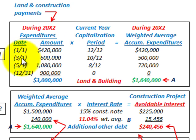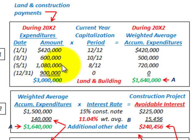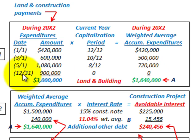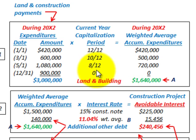For the March 1st payment, there are 10 months left in the year, so we use 10/12 times the payment amount. For the May 1st payment, 8 months remain, giving 8/12 times the expenditure amount — a weighted average of $720,000. The last payment made on 12-31 has a capitalization period of zero since it's made at year-end. Summing all weighted average accumulated expenditures gives us a total of $1,640,000.